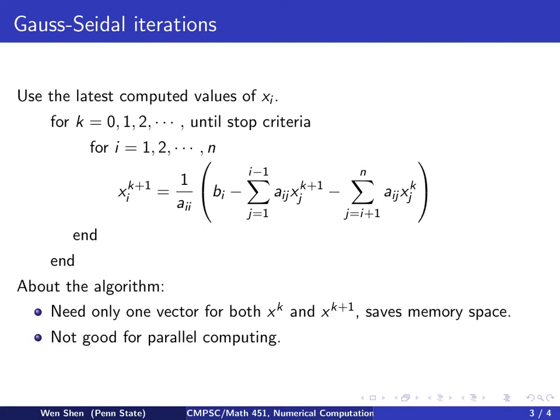Let's talk about this algorithm. So there's one thing really good about it. That is every time you compute a new value for xi, since it will be used right away in the next equation, then there is no need for you to keep two vectors. You can simply overwrite into the x vector, okay?